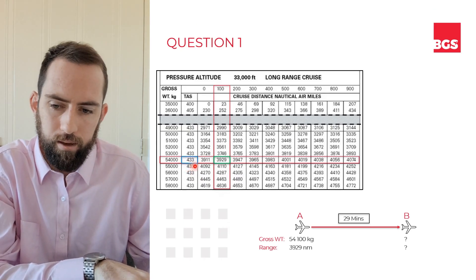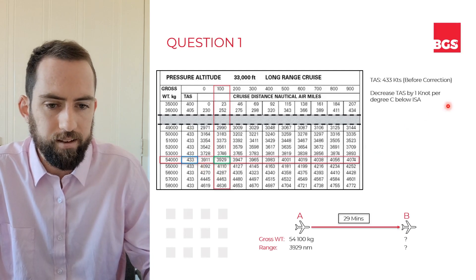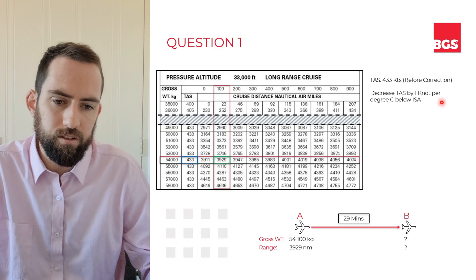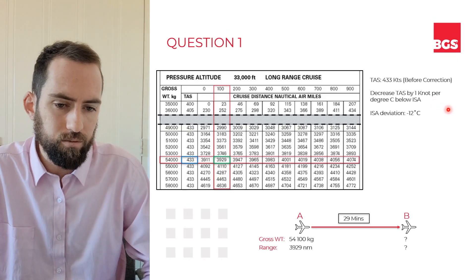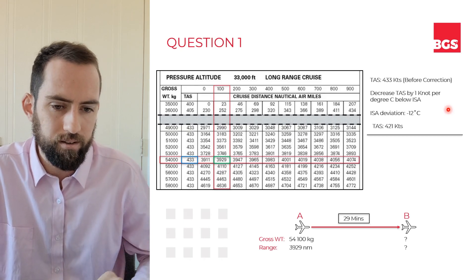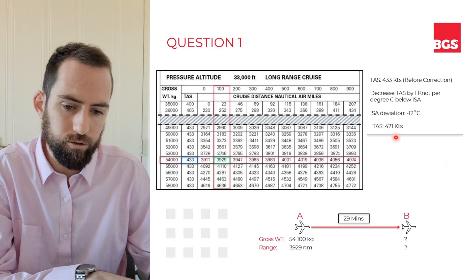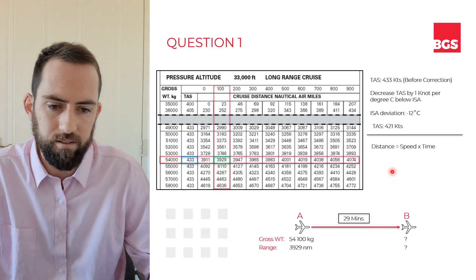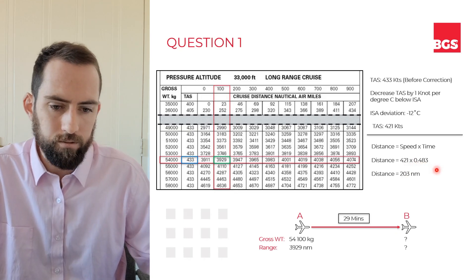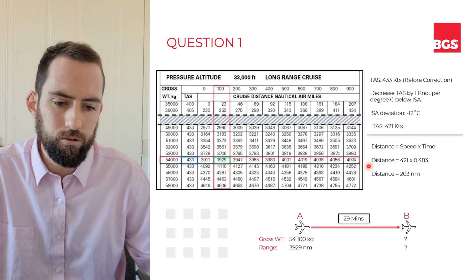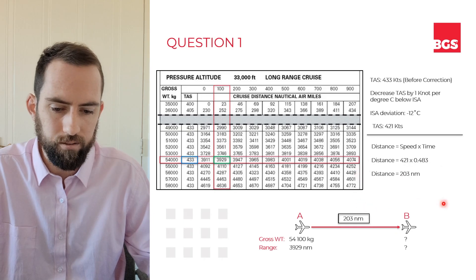That 433 knots is the true airspeed before correction, so we need to account for the non-standard temperature. The note says decrease true airspeed by one knot per degree Celsius below ISA. Our ISA deviation is minus 12, so our corrected true airspeed is 421 knots. Distance equals speed times time, so 421 multiplied by 29 minutes as a decimal gives us a distance of approximately 203 nautical miles. Let's replace the 29 minutes with 203 as it's a more useful figure.